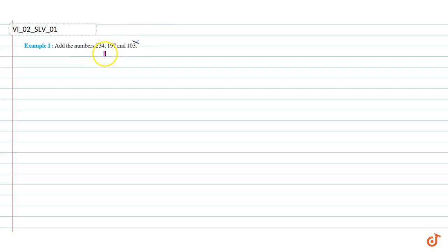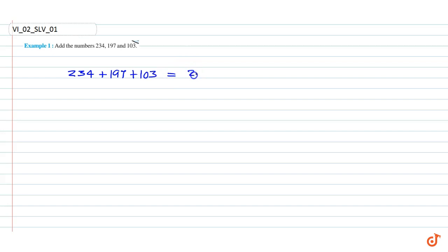In this question we have to add the given three numbers. The numbers are 234 plus 197 plus 103.